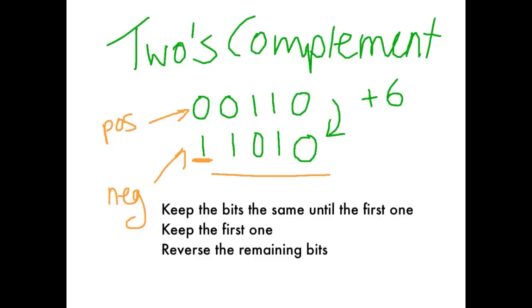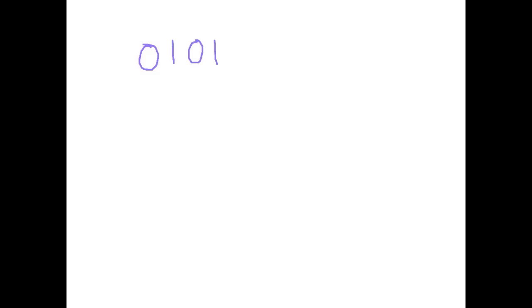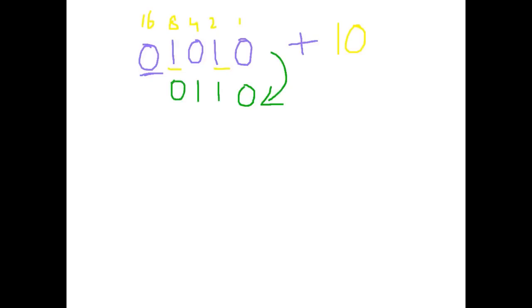Let's practice taking a 2's complement. Say I was given the number 0 1 0 1 0 — I would see first of all this is a positive. Then I can figure out what number it is by looking at the place values: 1, 2, 4, 8, and 16 — so it is a positive 10. To find the negative representation I take the 2's complement: keep everything the same until the first 1, keep that first 1, and change everything after that.